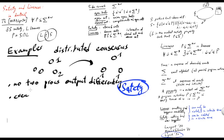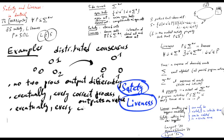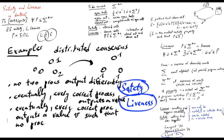The property which says that eventually every correct, non-crashing process outputs a value would be liveness. A mixed property would be, for example, saying that eventually every correct process outputs a value V such that no process has previously output a different value.